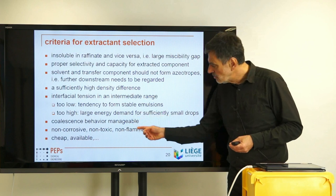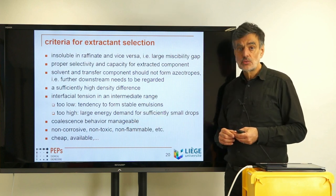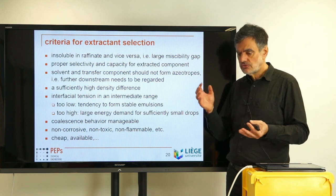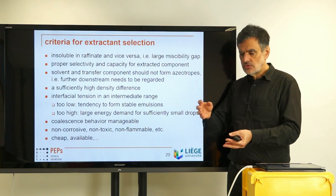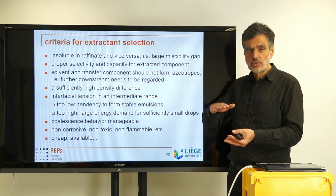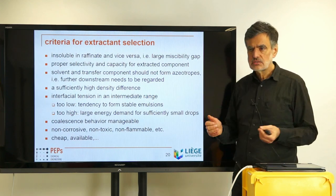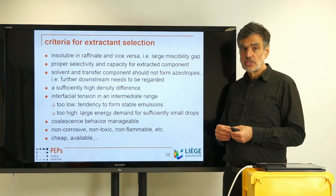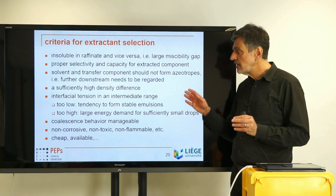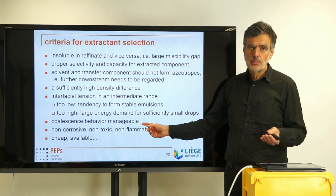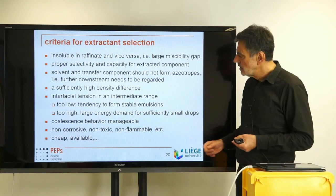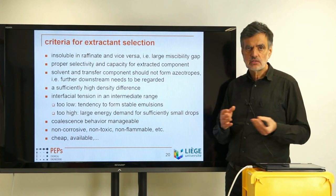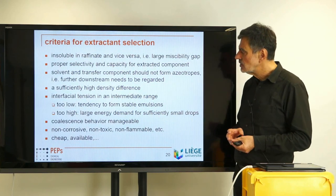An important parameter is coalescence behavior — it should be manageable. A simple characterization: shake the two-phase system in a flask, let it rest, and observe how long it takes for the two phases to separate. As a rule of thumb, if separation takes less than 300 seconds, the system is likely suitable for solvent extraction. However, coalescence is strongly affected by impurities such as ionic species, ionic surfactants, and salts in the system, making it a complex topic better suited for an expert course.